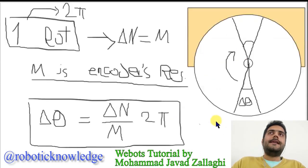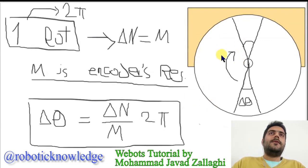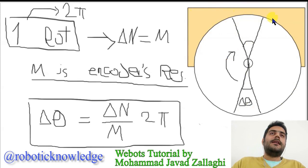Here you can see another drawing — again the side view of the turtle bot. You can see the wheel which is attached to the platform. Here we are seeing the wheel and the encoder.